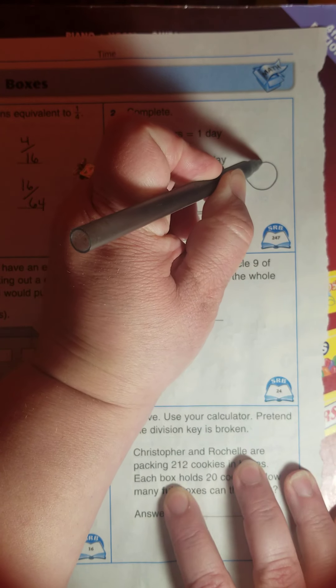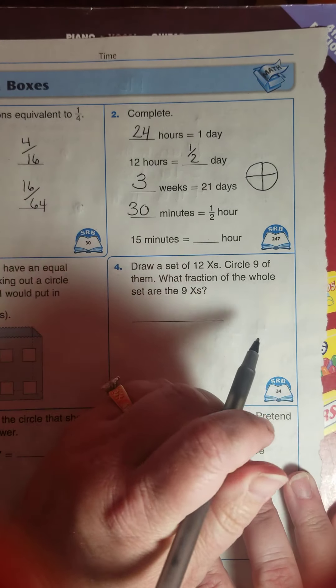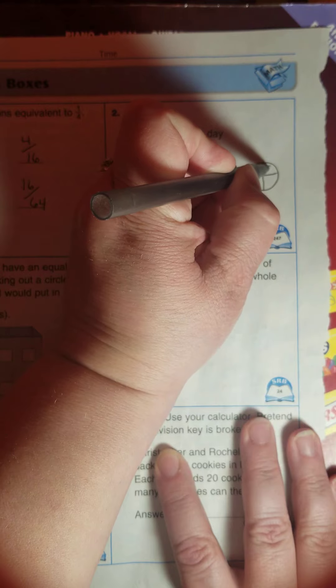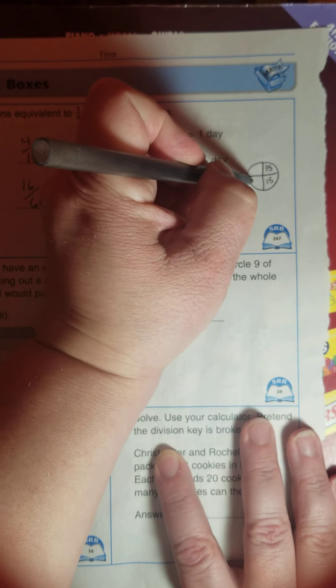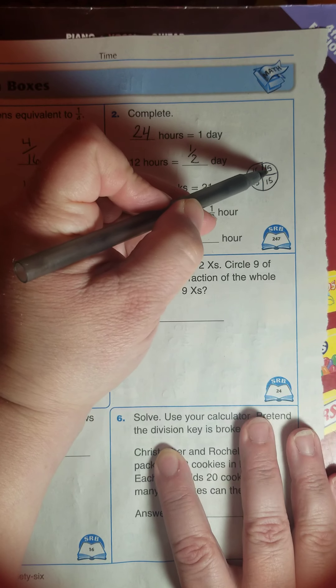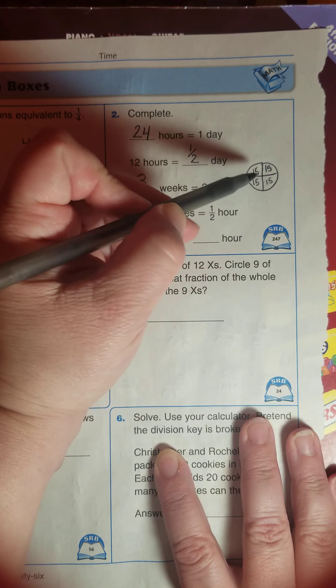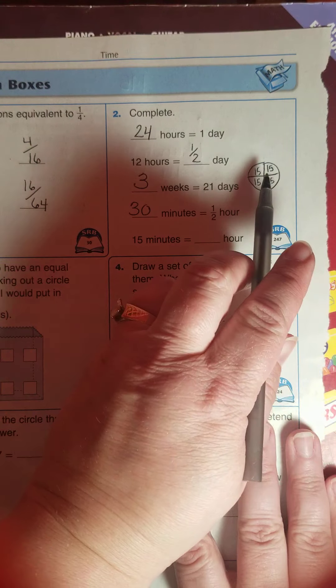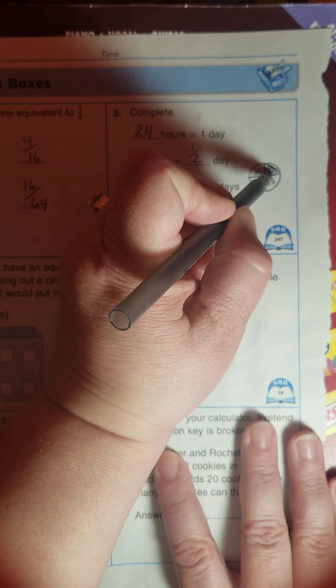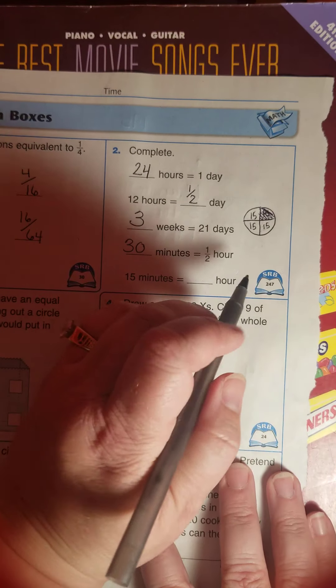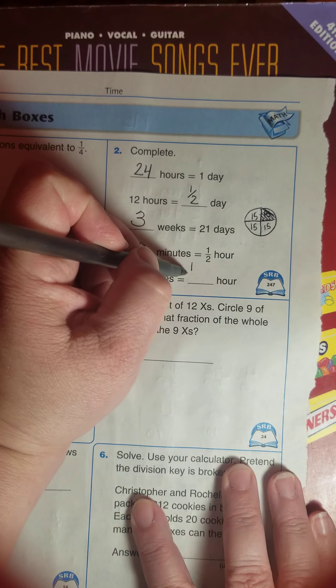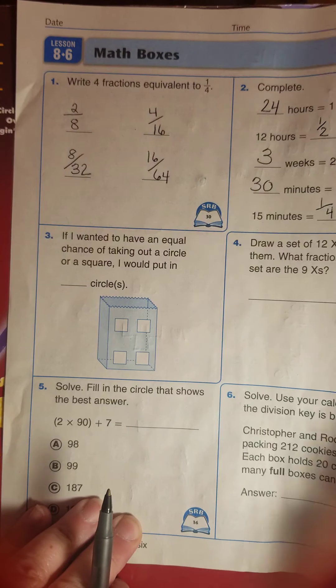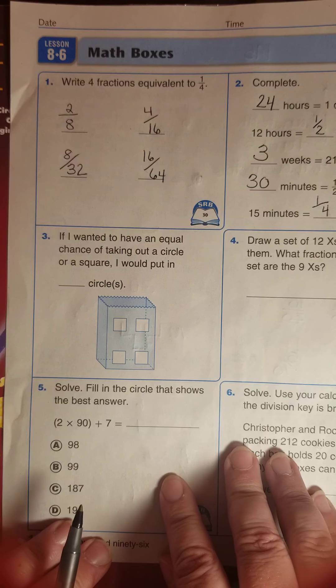Fifteen minutes. For this one, I'm going to draw a circle. I think of time sometimes in a circle because of a clock, and I'm going to divide it into four parts. I know that there are fifteen minutes in each of these four sections. Fifteen plus fifteen makes thirty, that's half of the hour. There's thirty over here, thirty plus thirty makes sixty. So fifteen minutes would be what fractional part of an hour? It would actually be one-fourth or one-quarter of that hour.